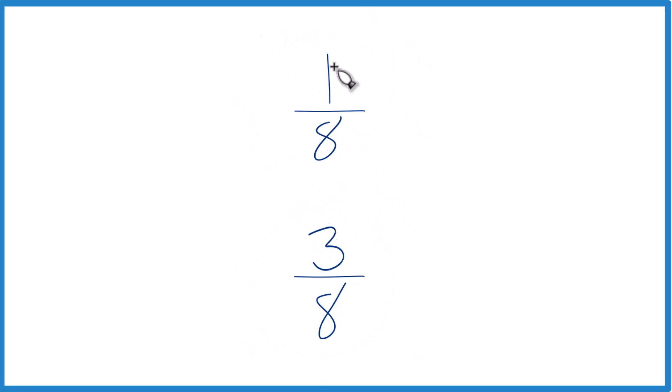So you could just divide 1 by 8 on a calculator, get a decimal, divide 3 by 8 and get a decimal, and compare the decimals. That's one way to figure out if 1 eighth is greater than, equal to, or less than 3 eighths.